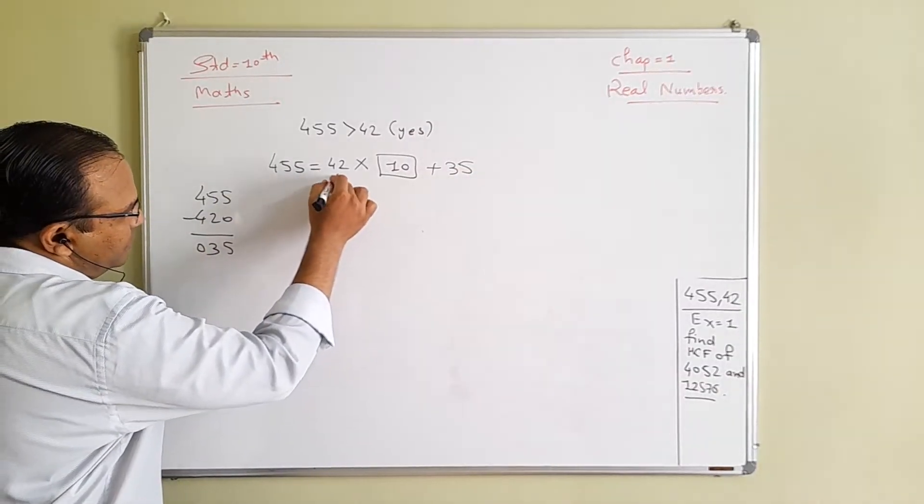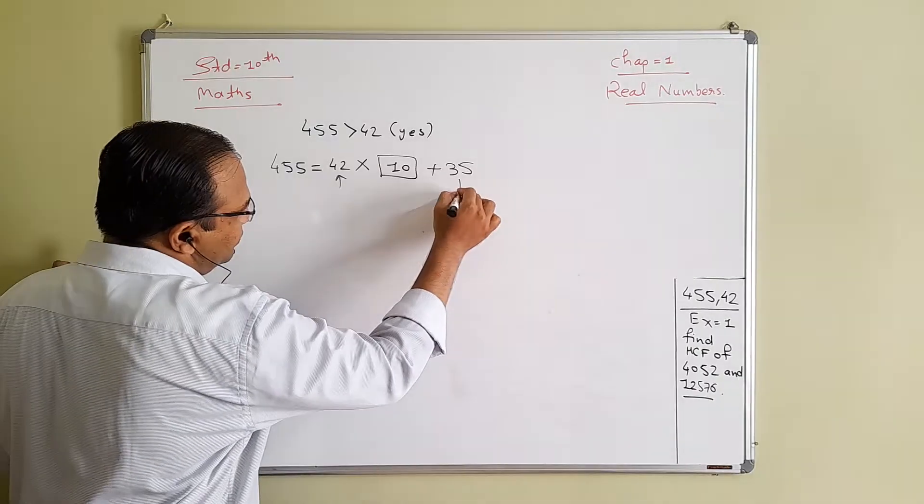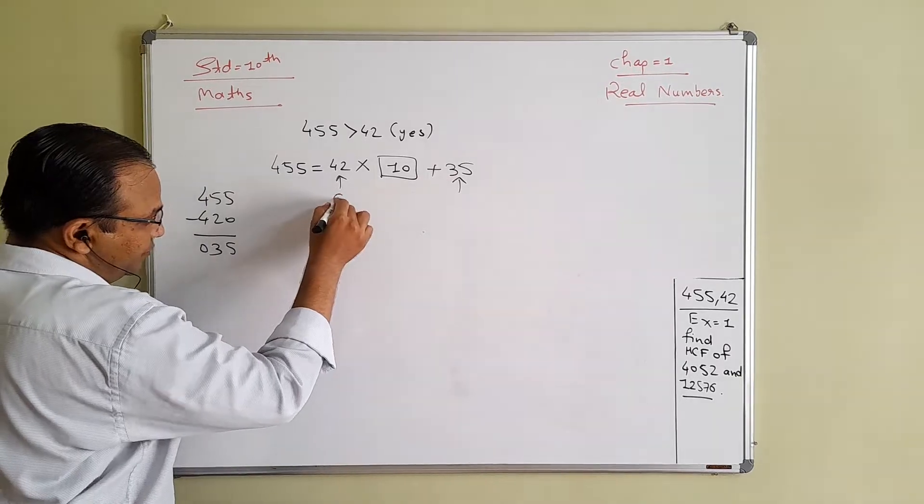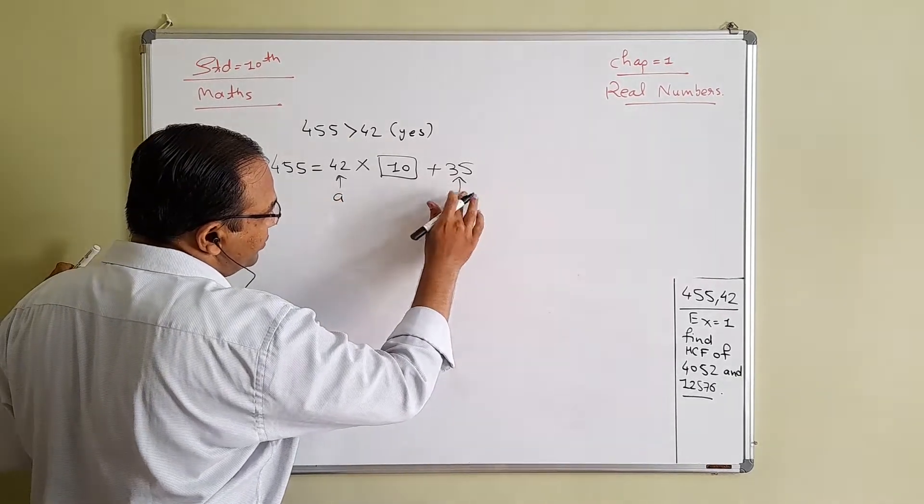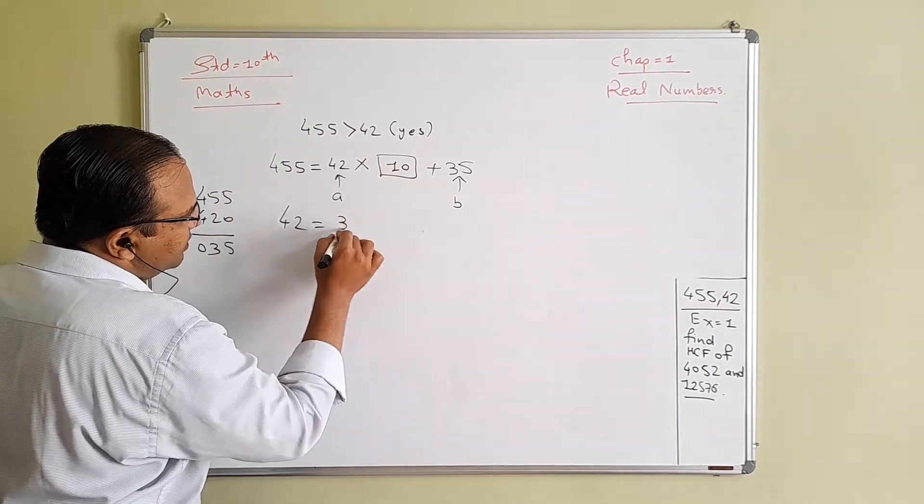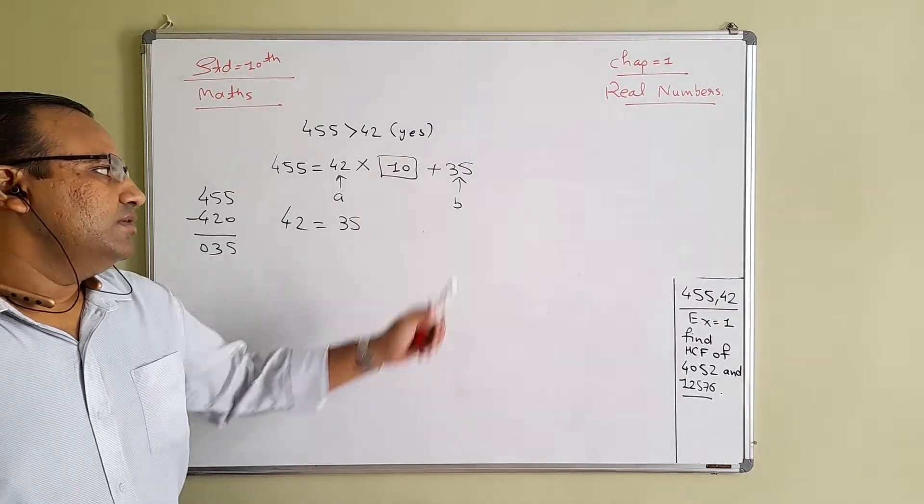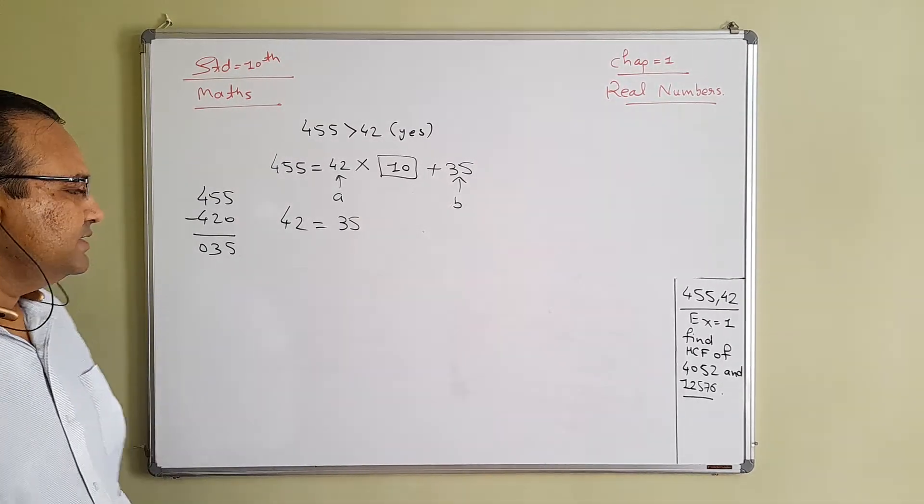Now in the next step, 42 and 35. 42 is your new A and 35 is your new B, so you will write 42 here and 35 here. So this is the process until the time we will get the remainder as 0.